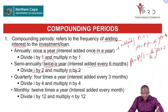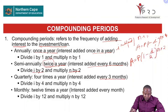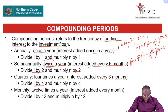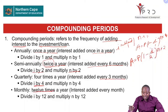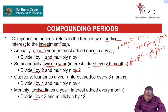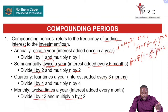Quarterly means we add interest four times a year — every three months. We divide i by 4 and multiply n by 4. Monthly means 12 times a year — interest is added after every month. We divide i by 12 and multiply n by 12. In general, for any compounding period, we divide i by that compounding period and multiply n by that compounding period.